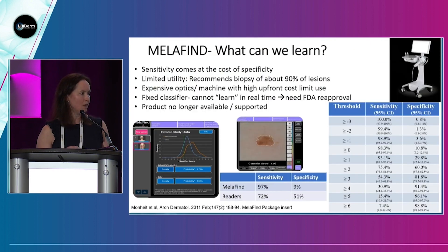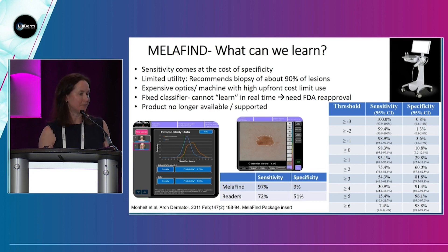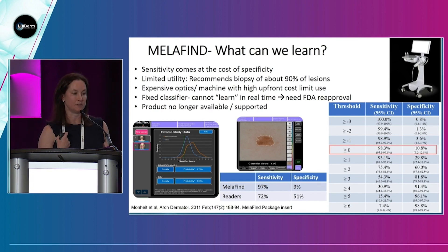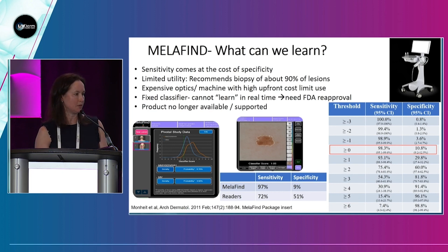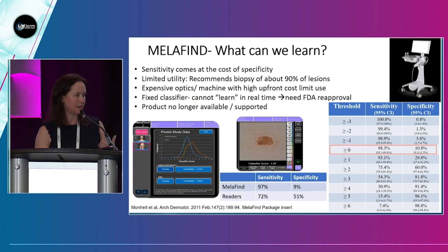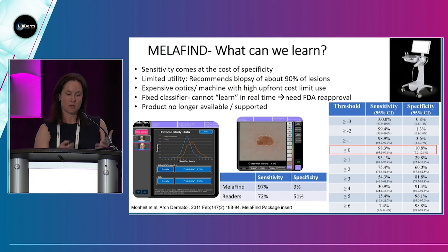When I first started, I was doing clinical trials for MelaFind, which is something many of us were excited about but don't really use anymore. We learned some lessons from it. Sensitivity comes at the cost of specificity — it translated to a machine telling us to biopsy 90% of evaluated lesions, which ends up not being particularly clinically useful. It was an expensive machine with all the optics built in. Because of how FDA approval works, it had a fixed classifier — meaning you can't learn and change it over time without going through FDA re-approval — and it's no longer available.